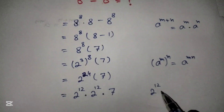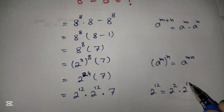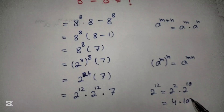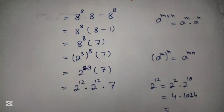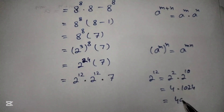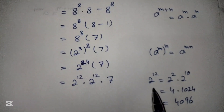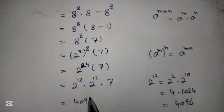First we will simplify 2 raised to power 12: we write it as 2 raised to power 2 into 2 raised to power 10. Now, 2 raised to power 2 equals 4 and 2 raised to power 10 equals 1024. Multiplying 4 into 1024, we get 4096. So 4096 is the value of 2 raised to power 12.